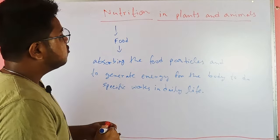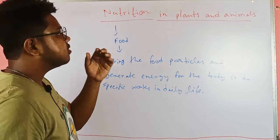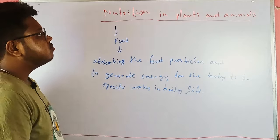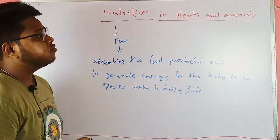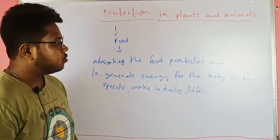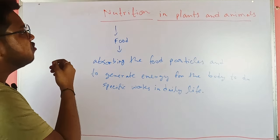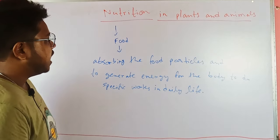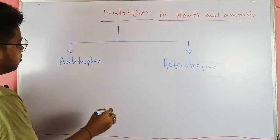Nutrition in plants and animals is different. In plants, nutrition is autotrophic, and in animals nutrition is heterotrophic. Now we will discuss the different types of nutrition in plants and animals.